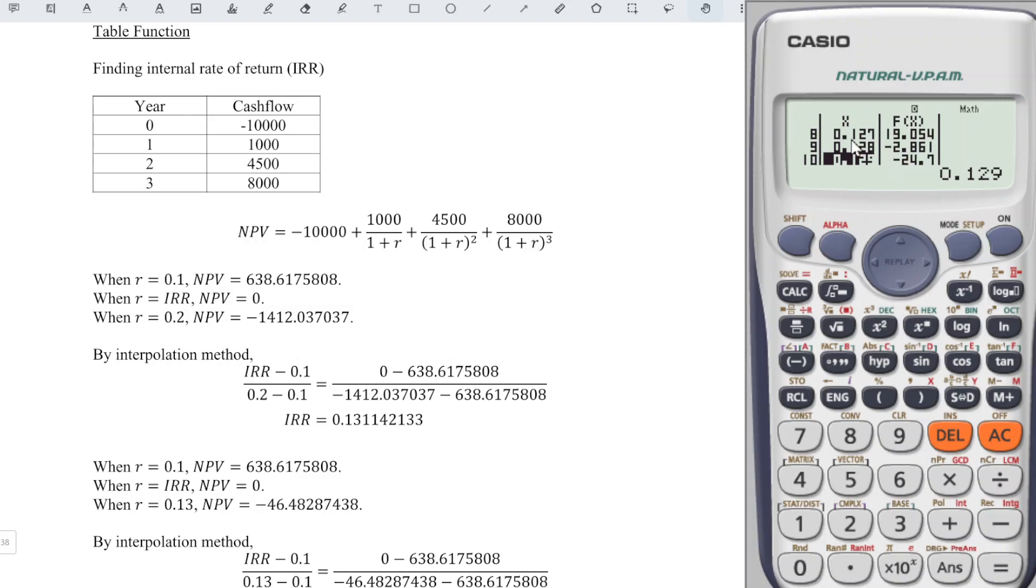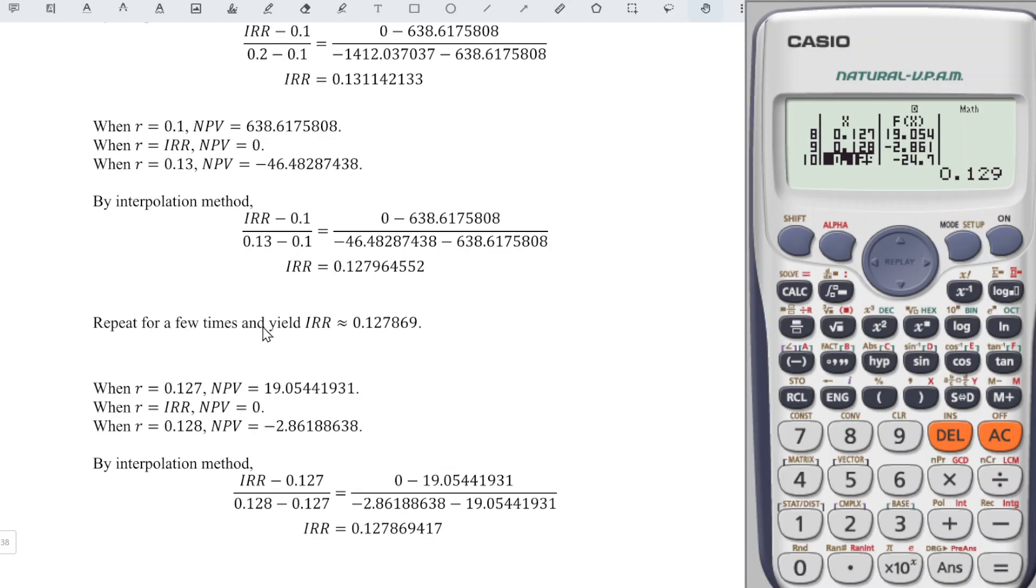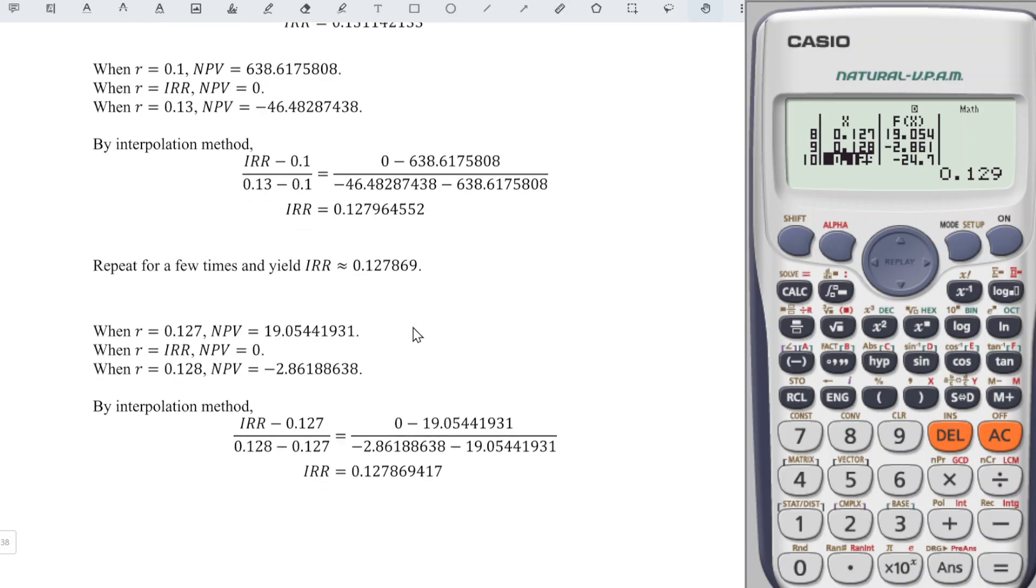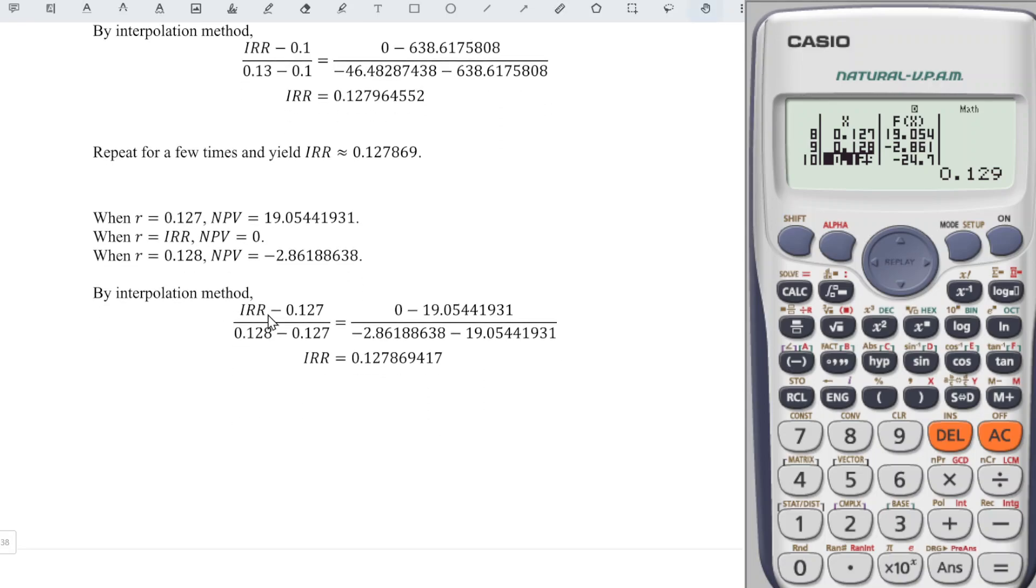Press equal down and we can see that the value now is between 0.127 and 0.128. If we take the initial values 0.1 and 0.2, we can see that we have to take a few steps before we are able to obtain the internal rate of return. But if we start with 0.127 and 0.128, just in one or two steps we already obtained the answer.